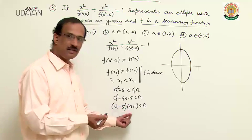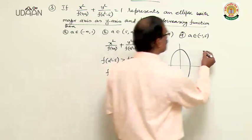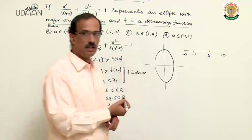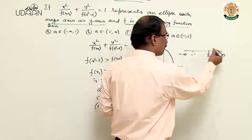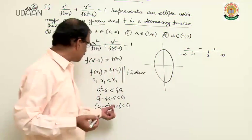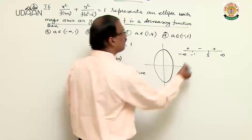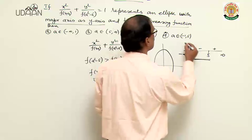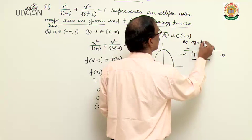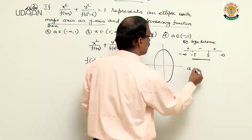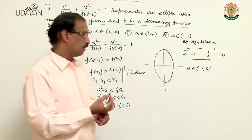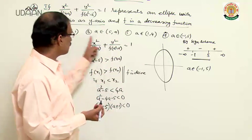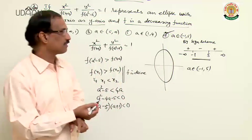Using a number line with critical points -1 and 5, applying sign scheme (+ - +), the expression (a-5)(a+1) < 0 in the interval (-1, 5). So a ∈ (-1, 5), which is option D.